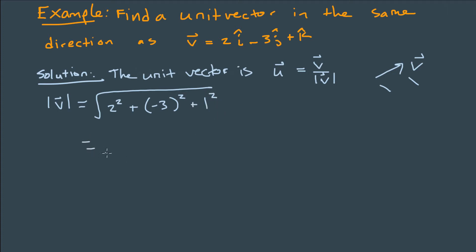Then we get the square root of 4 plus 9 plus 1, which is the square root of 14. So the square root of 14 is the magnitude of v. So we were right, the magnitude of v is not 1. The magnitude or the length of this vector right now is the square root of 14.